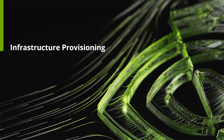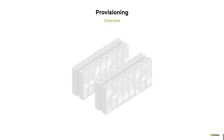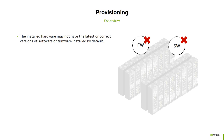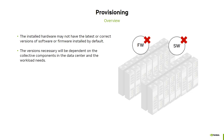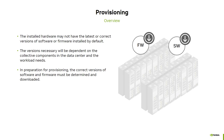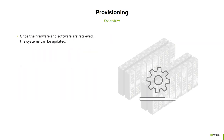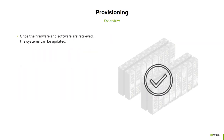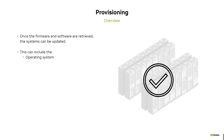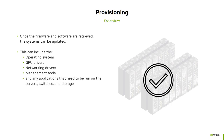In this section we'll talk about infrastructure provisioning. Once the infrastructure is installed in the data center or procured in the cloud, the hardware needs to be provisioned before it can be used. The installed hardware may not have the latest or correct versions of software or firmware installed by default. The versions necessary will be dependent on the collective components in the data center and the workload needs. In preparation for provisioning, the correct versions of software and firmware must be determined and downloaded. Once retrieved, the systems can be updated — this can include the operating system, GPU drivers, networking drivers, management tools, and any applications that need to run on the servers, switches, and storage.